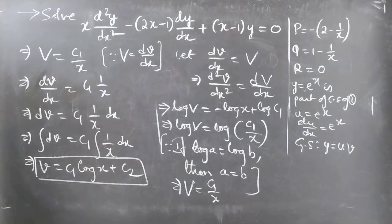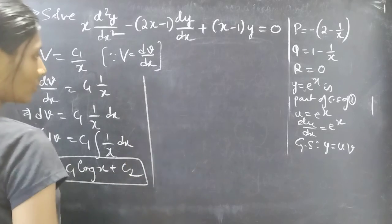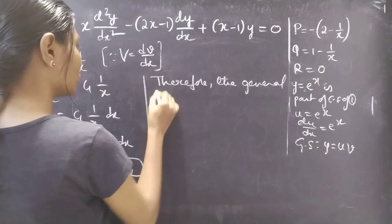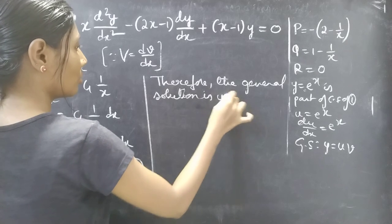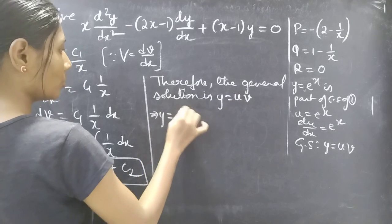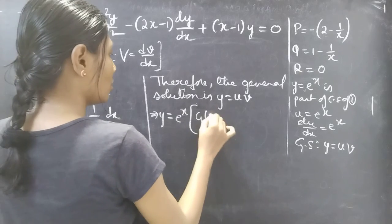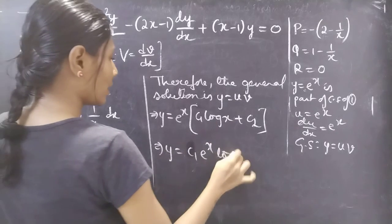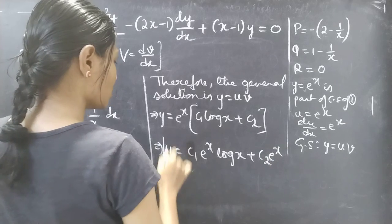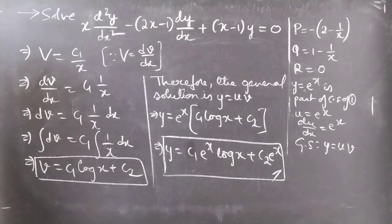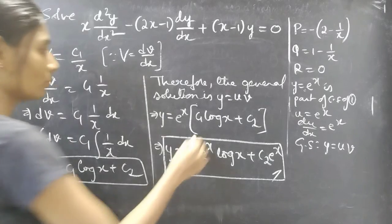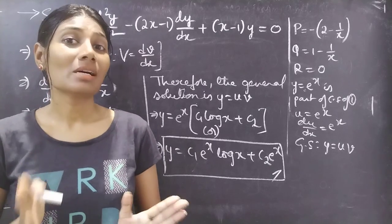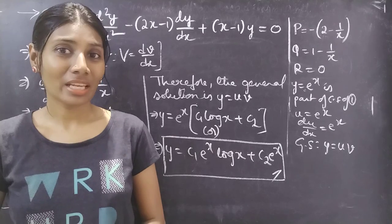We have u and v, so we can find the general solution using y = u·v. Therefore y = eˣ · (C₁ log x + C₂), which gives y = C₁ eˣ log x + C₂ eˣ. This is the required general solution. We have solved a problem from higher order linear differential equations with variable coefficients using the reduction of order method. Hope you understood. See you in the next video — until then, bye bye.